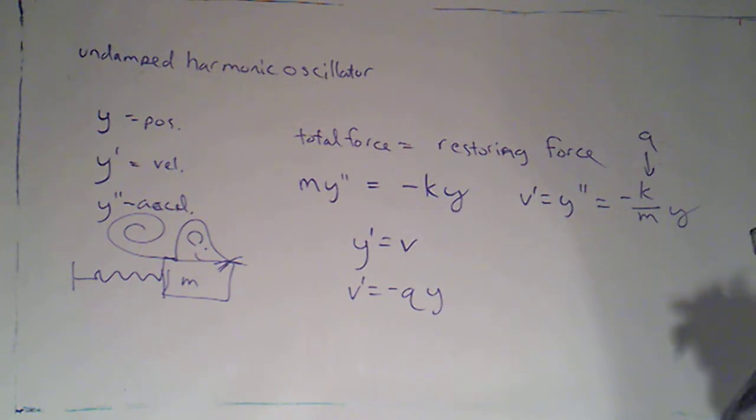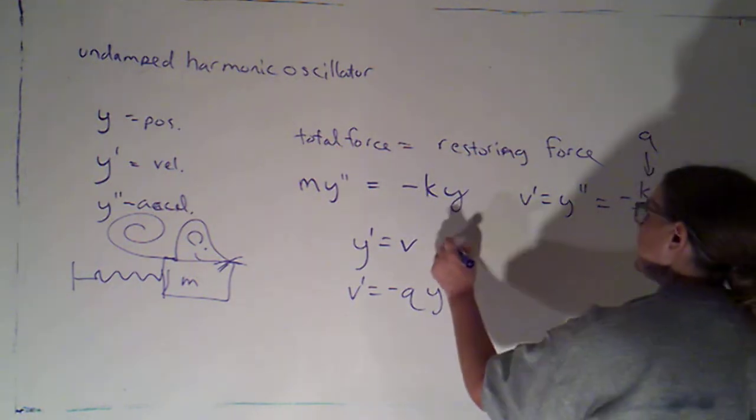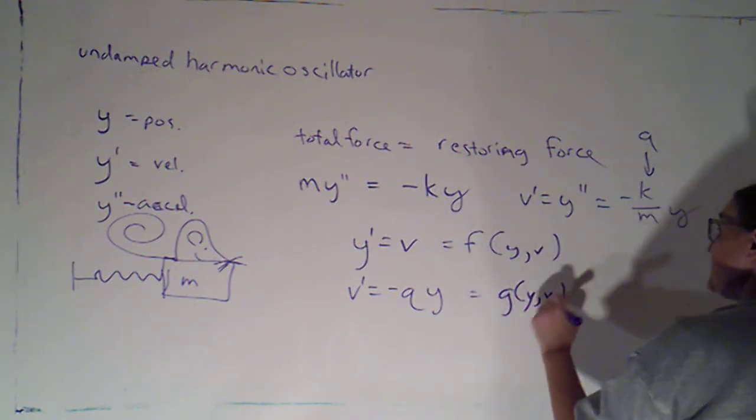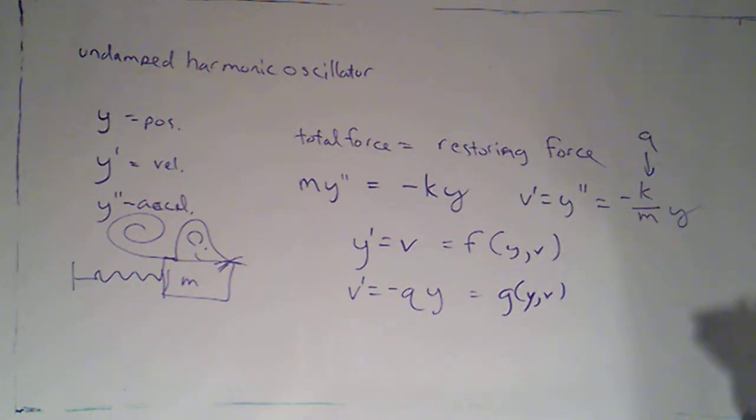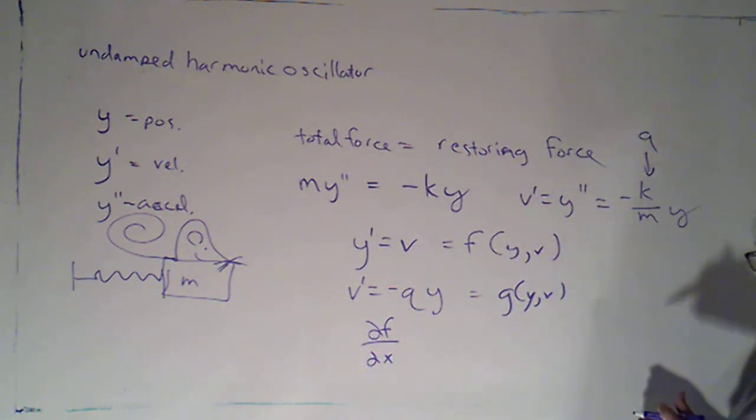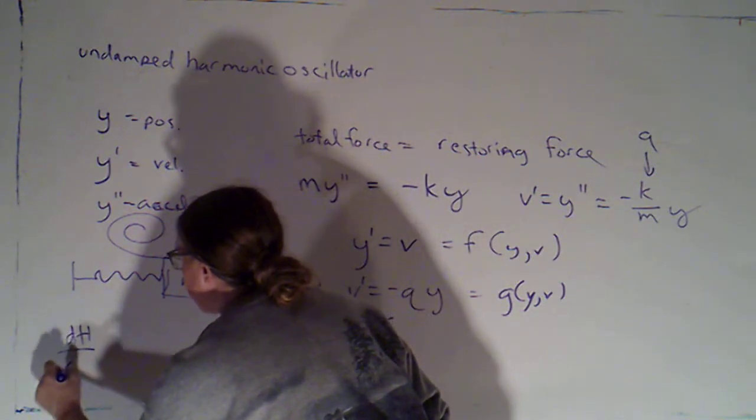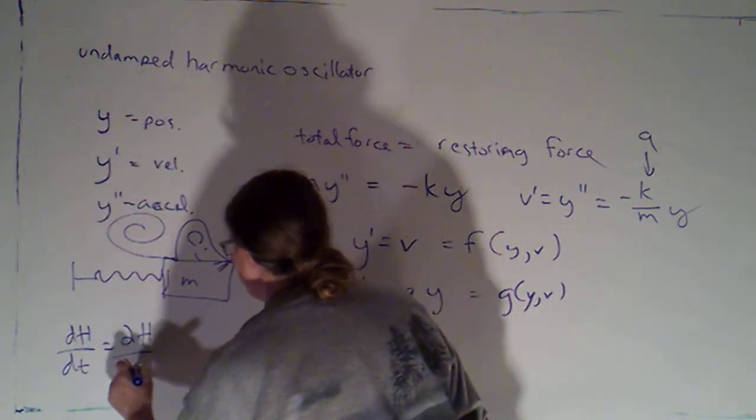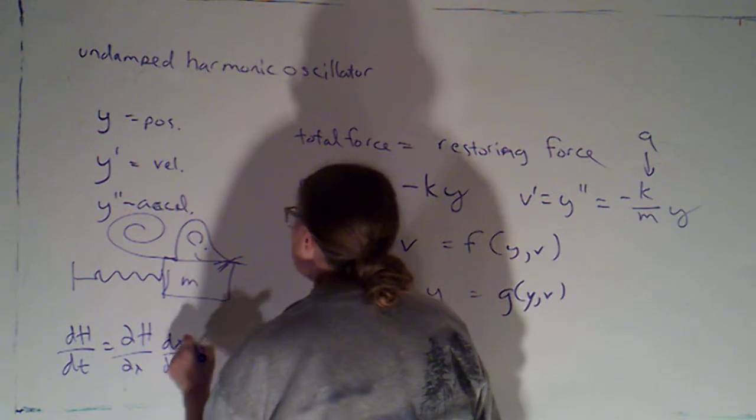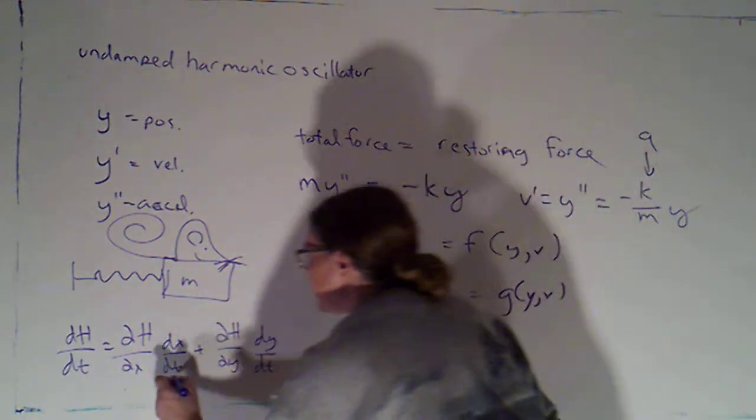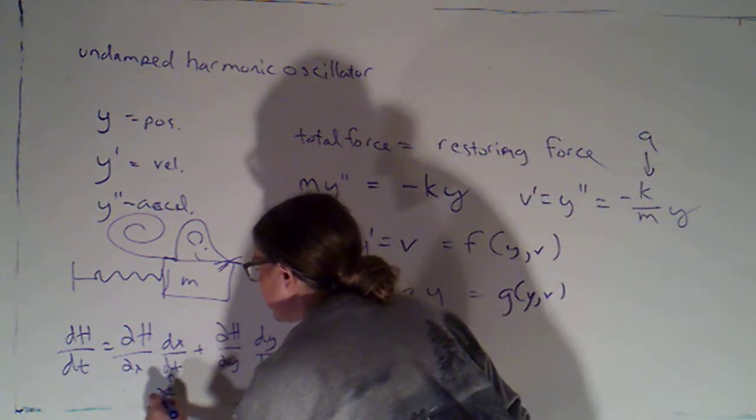So, let's confirm that this is Hamiltonian and find our Hamiltonian function. I'm saying this is my f of y, v and this is g of y, v. To check to see whether it's Hamiltonian, I'm taking the partial of f with respect to x. I'm hoping if it's Hamiltonian that this whole thing is zero. The partial of my Hamiltonian function, if it exists, with respect to x times dx by dt, plus the partial of my Hamiltonian with respect to y times dy by dt.